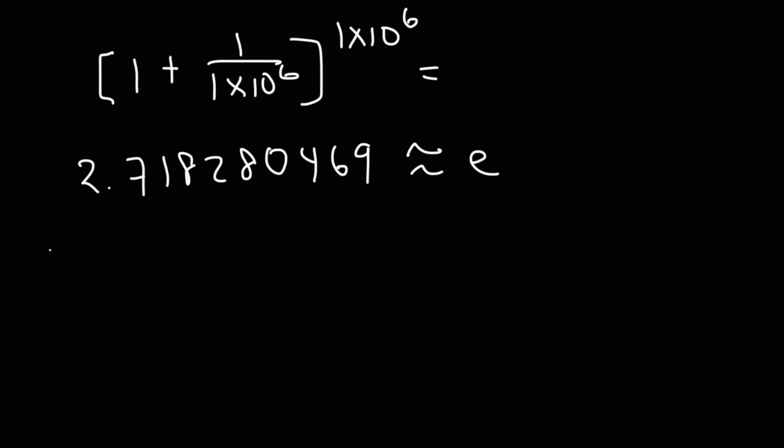So for instance, if you plug in 1 plus 1 over, let's say n is a million, or 1 times 10 to the 6, if you type this into your calculator, you're going to get 2.718280469, which is approximately e. So thus we could say that the limit as n goes to infinity of the expression 1 plus 1 over n raised to the n is e. So that's where the number e comes from. At least that's one way in which you can calculate it.